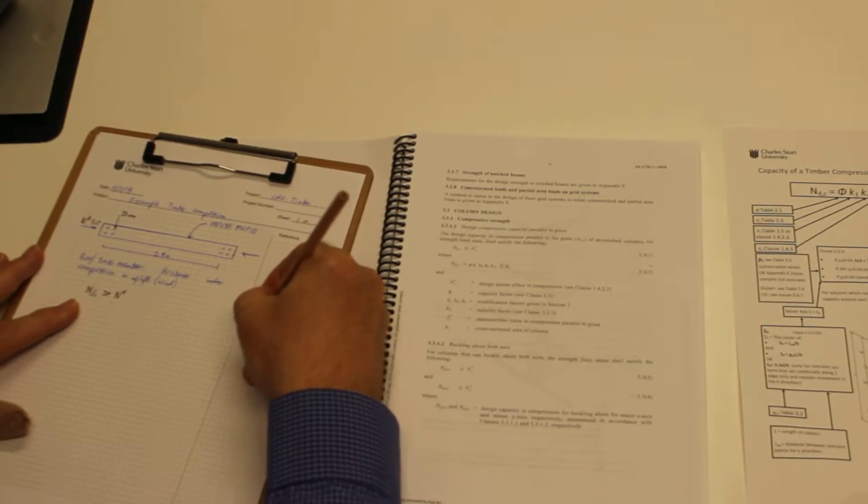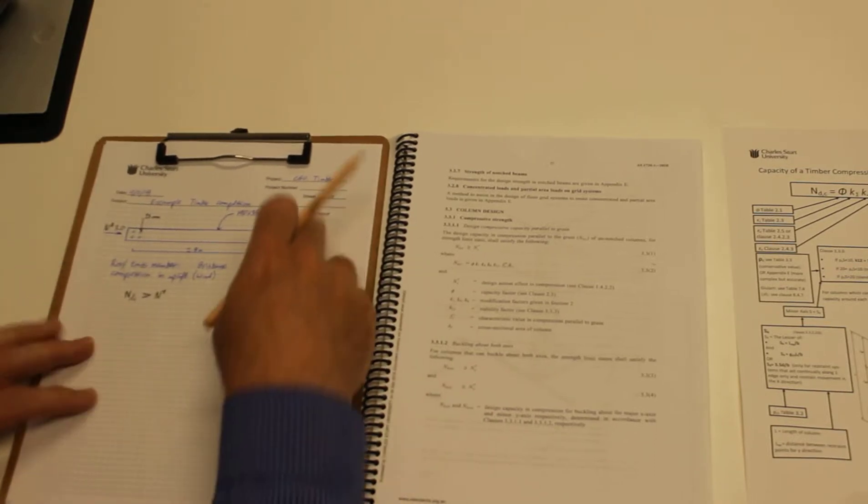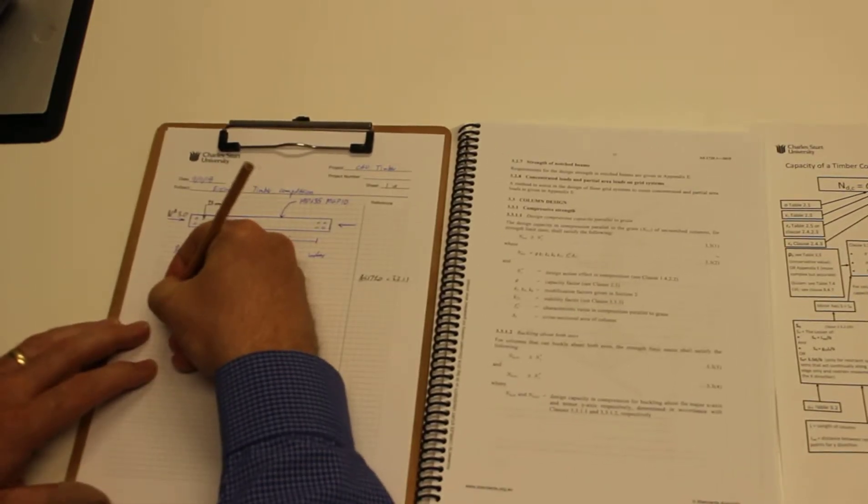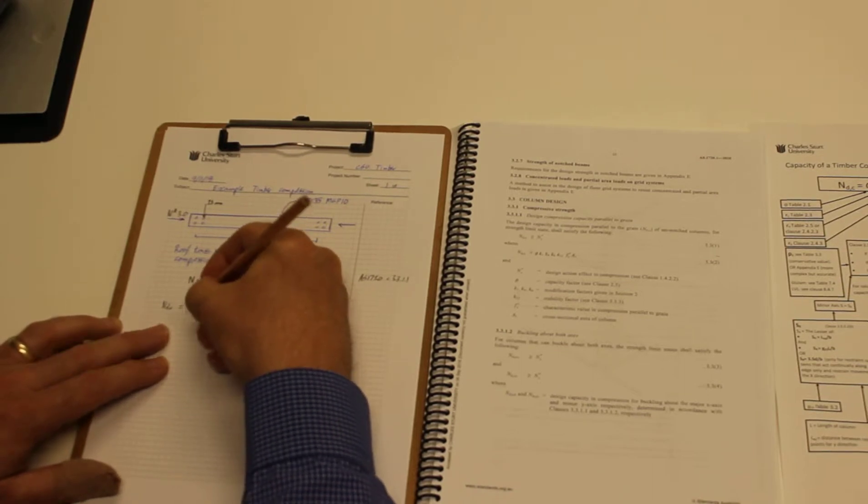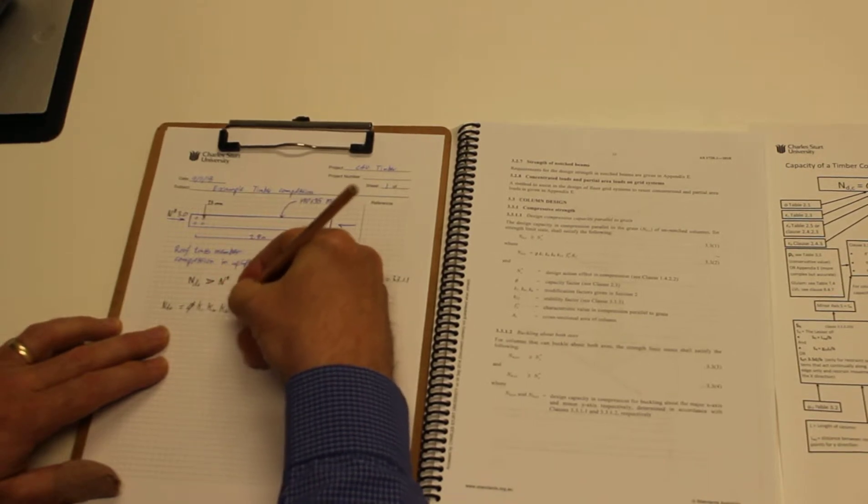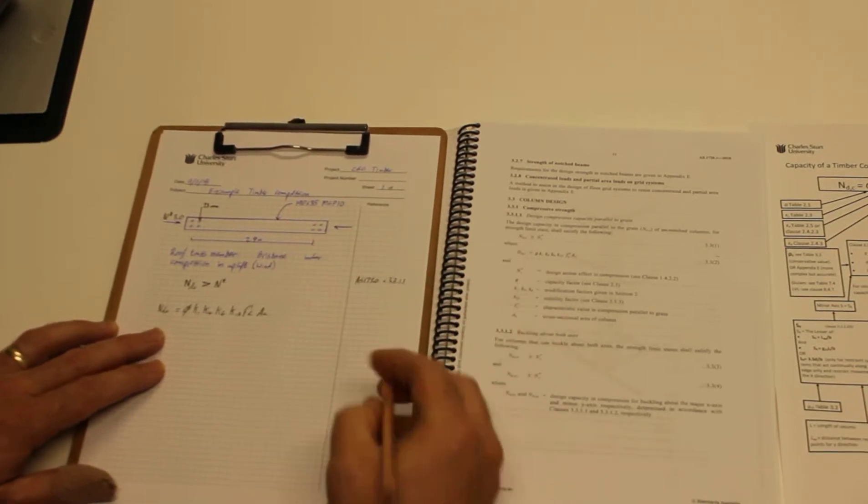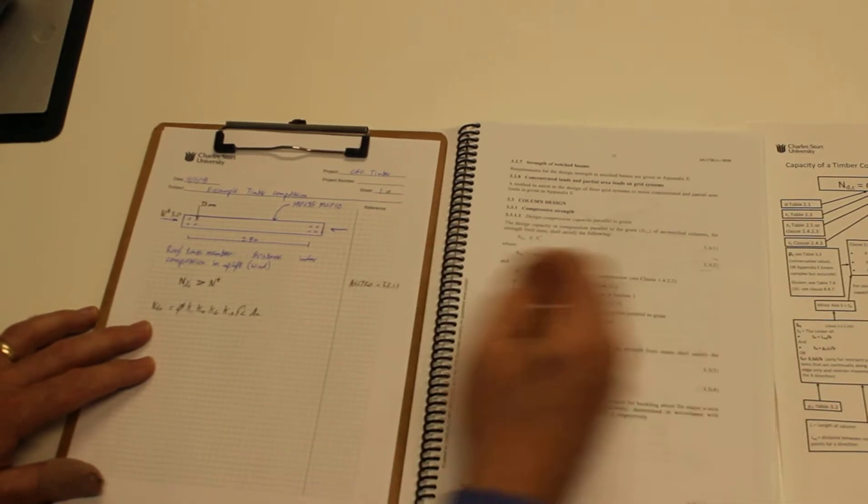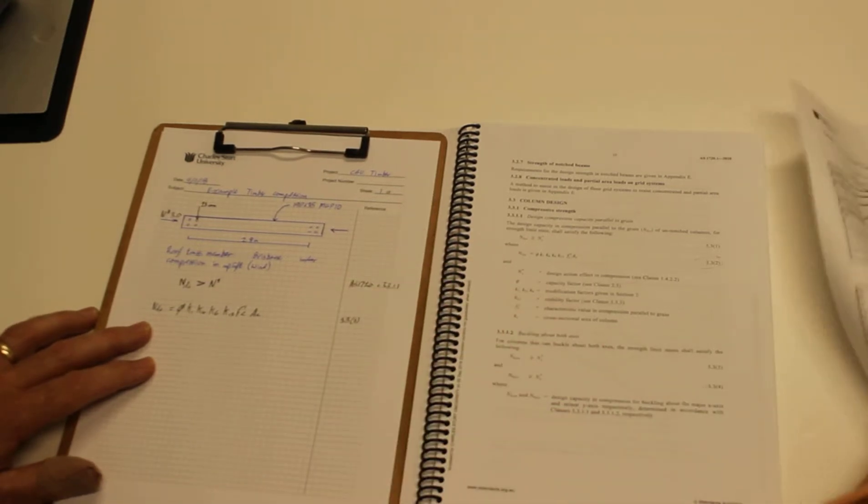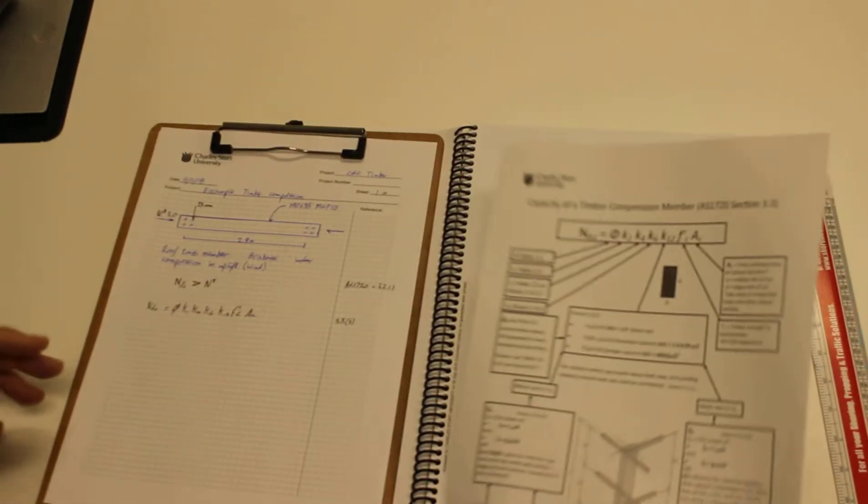That comes from AS1720 clause 3.3.1.1. We're going to reference all the code and other tables down the right-hand side here. We know that NDC equals phi times k1, k4, k6, k12, f'c and Ac. That's equation 3.32 from the code, and that's also the same equation we have in our summary sheet. So we have to go through and find each of those one by one.